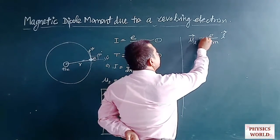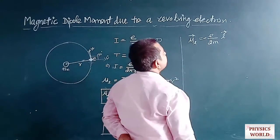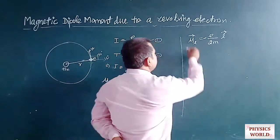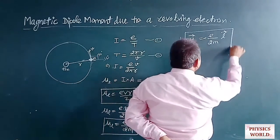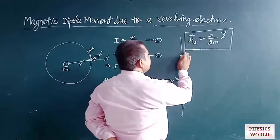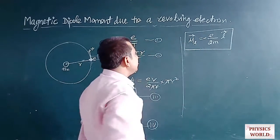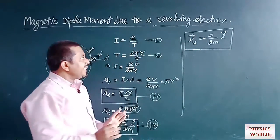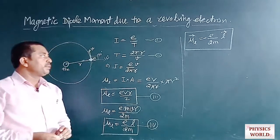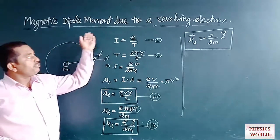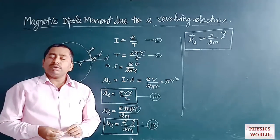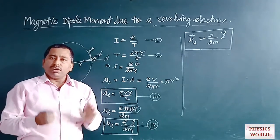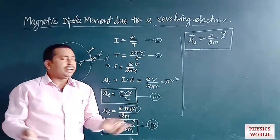Therefore, we place a negative sign, giving: μL vector = −(E / 2m) × L vector. This is the vector form of the relation between the magnetic dipole moment and the angular momentum possessed by the electron.